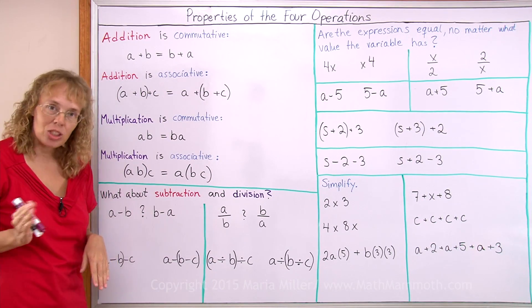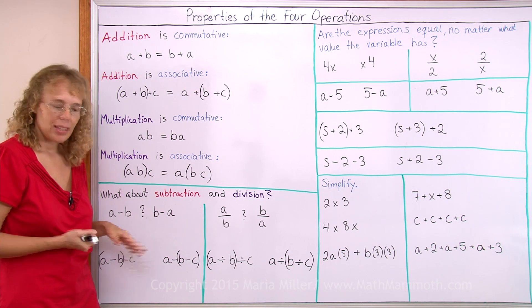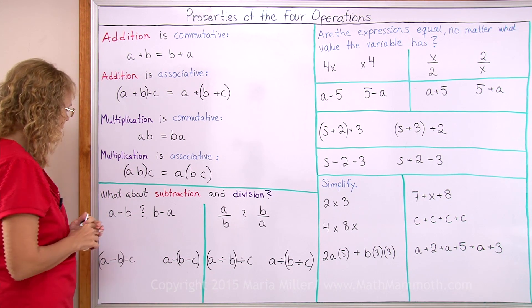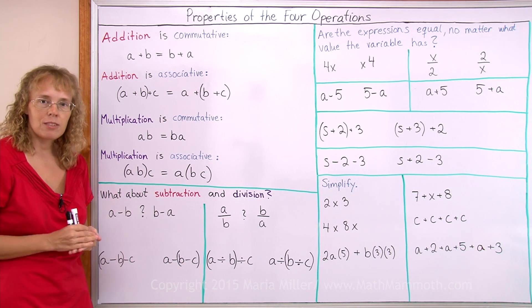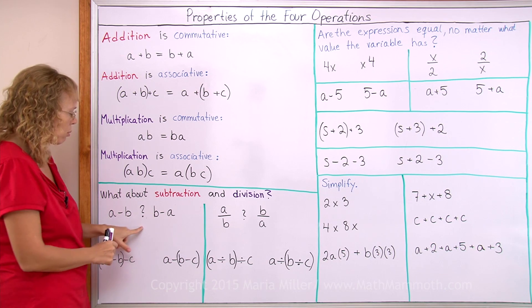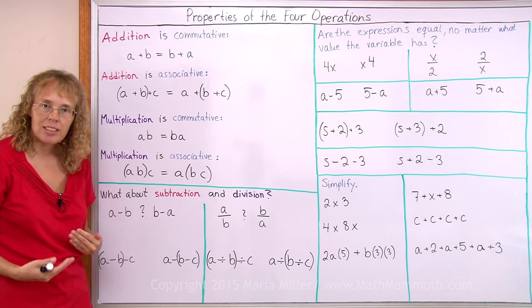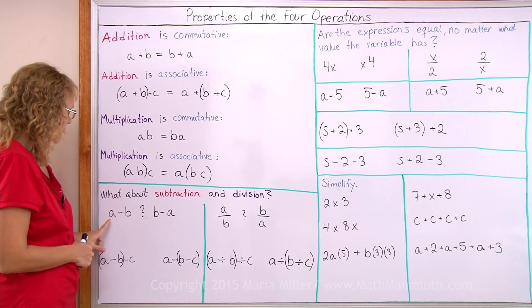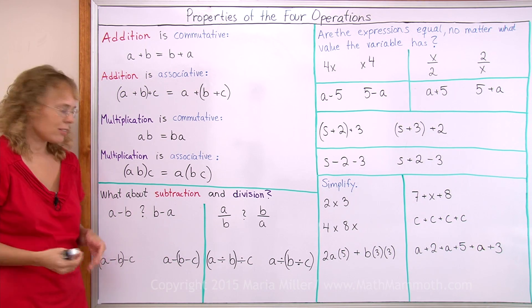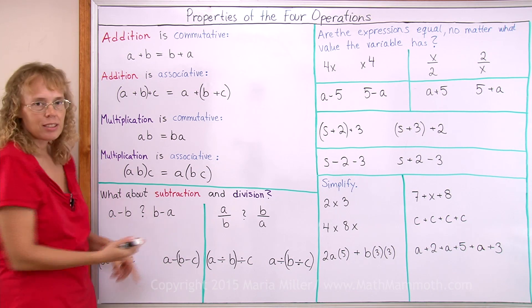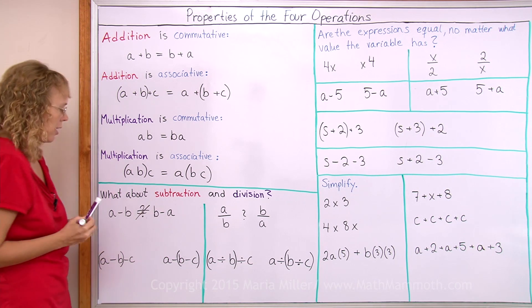What about subtraction and division? Are there anything like that for them? Let's check and see. For example, if there was a commutative property for subtraction, it would say that A minus B equals B minus A, right? But that is clearly not the case. If you take any two numbers like 10 and 5, 5 and 10, it will not work. Here you would get 5, here you would get negative 5. So, these two are usually not equal.